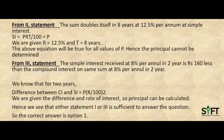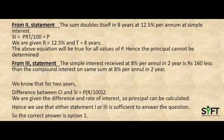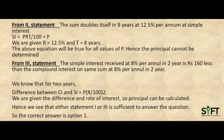Statement 3 says the simple interest received at 8% per annum in two years is Rs. 160 less than the compound interest on the same sum at 8% per annum in two years. From this statement, for two years the difference between compound interest and simple interest is P × (R/100)^2. We are given the difference and rate of interest, so the principal can be calculated. Hence, either Statement 1 or Statement 3 is sufficient to answer the question. The correct answer is option 1.